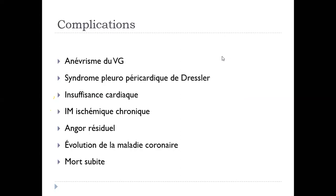Les autres complications tardives sont le syndrome pleuro-péricardique de Dressler, l'insuffisance cardiaque, l'IM ischémique chronique, l'angor résiduel, l'évolution de la maladie coronaire et la mort subite. Pour le syndrome de Dressler : le patient consulte un mois après un infarctus pour une douleur thoracique, on lui fait une échographie cardiaque et on trouve un épanchement péricardique. Ça répond aux anti-inflammatoires et il disparaît.